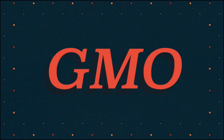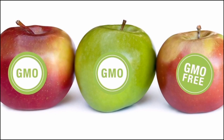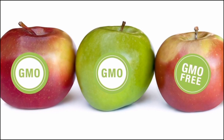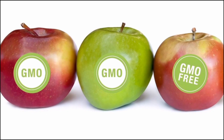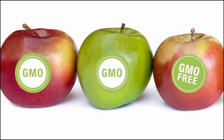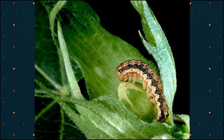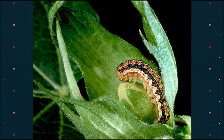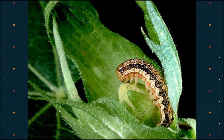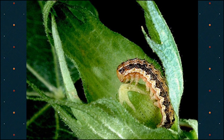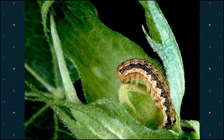Another technique to improve our food production can be GMOs, which stands for genetically modified organisms. By modifying the genetics of our food we can make food larger, last longer, and taste better. We can also create plants that have natural pest resistance, so we can reduce the amount of pesticides that we use.